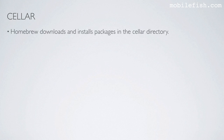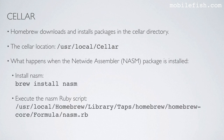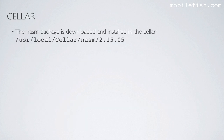Now I will explain the term cellar. Homebrew downloads and installs packages in the cellar directory. The cellar location is this path. Here is an example: when you install the NetWide Assembler package, aka NASM. To install NASM with Homebrew, enter this command. Next, the NASM Ruby script will be executed, located at this location. Next, the NASM package is downloaded and installed in the cellar — here is an example.